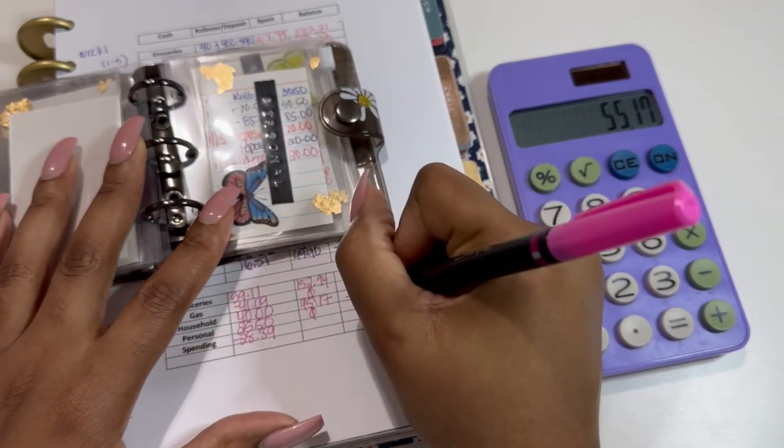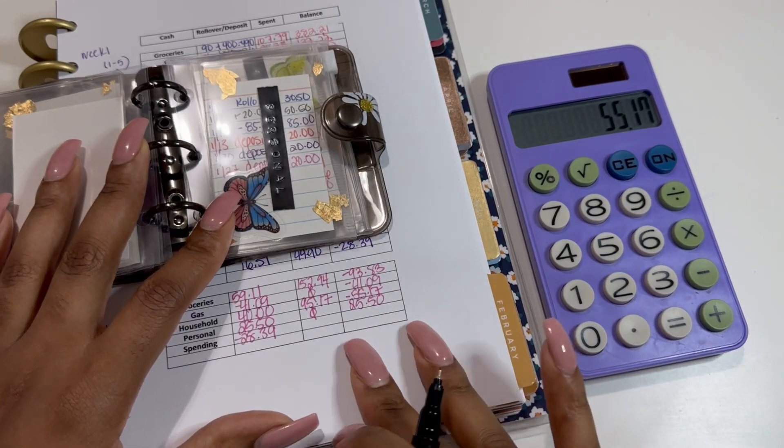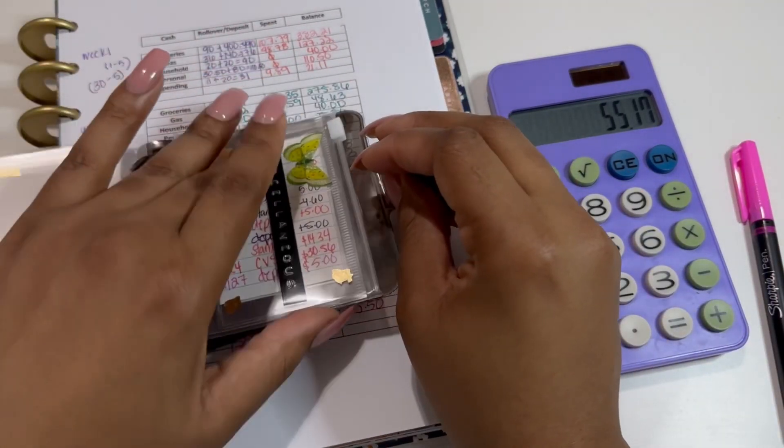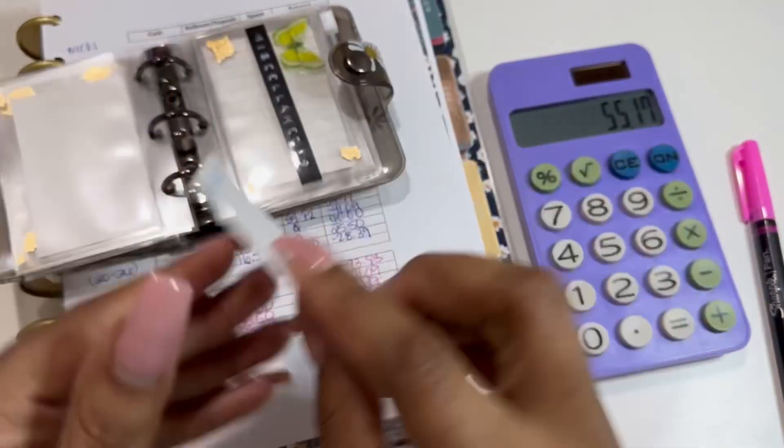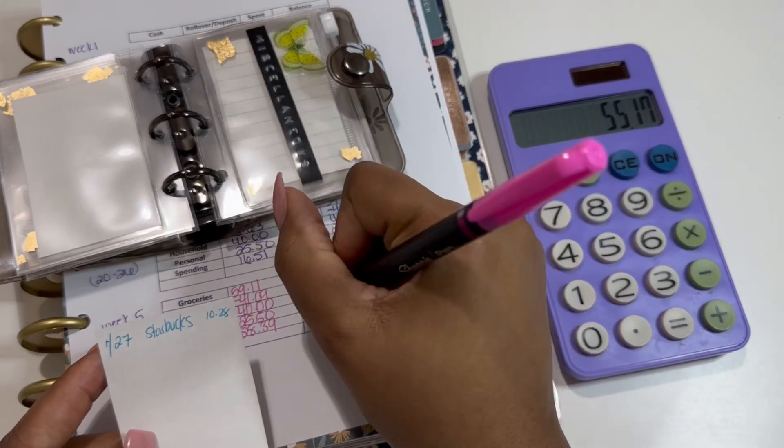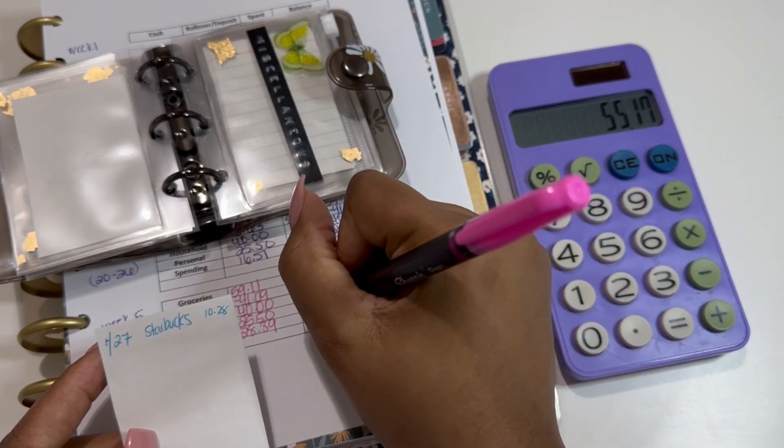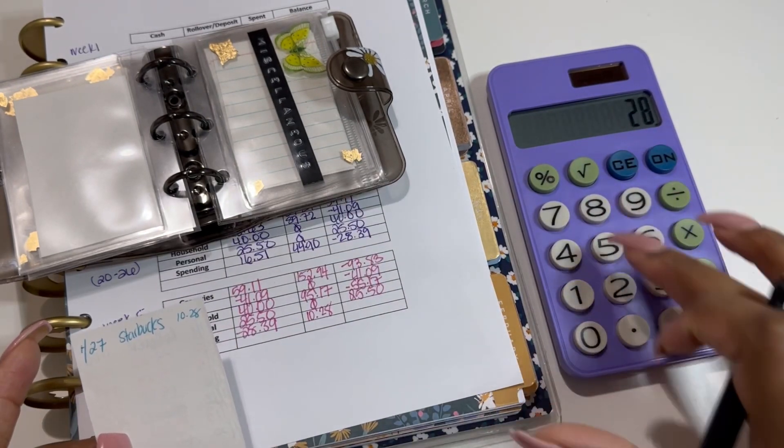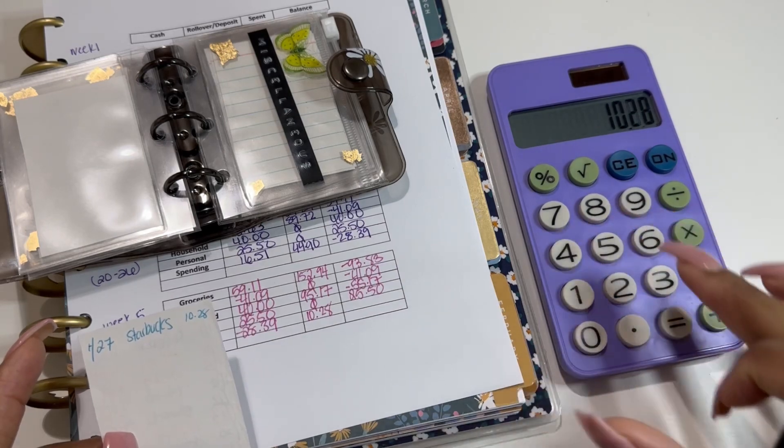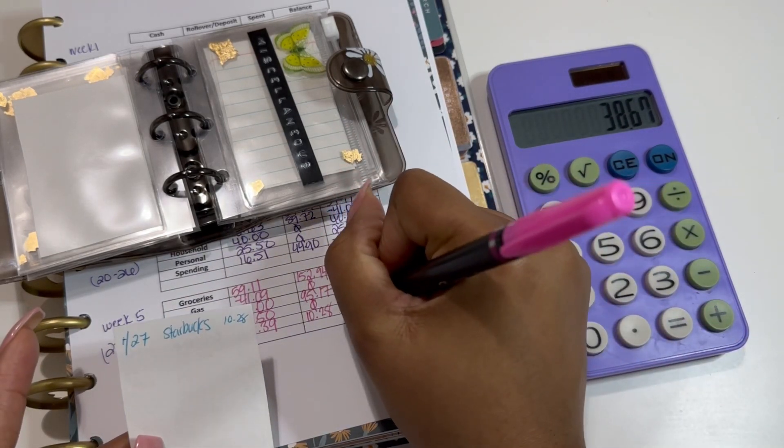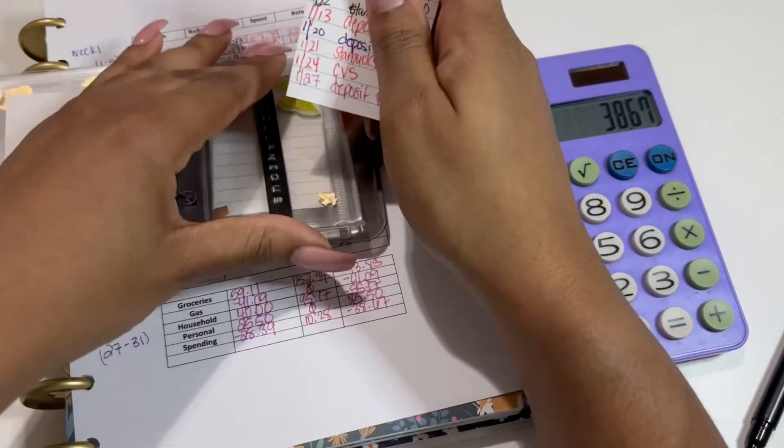Next is going to be personal, and I did not do anything in personal, and we actually have 25.50 for that account that will roll over. And then lastly we have miscellaneous, and that Friday on my way to work I did stop at Starbucks to get me something to eat, so I spent ten dollars and 28 cents. So we're just gonna add 28.39 plus ten dollars and 28 cents, which equals negative 38 and 67 cents.